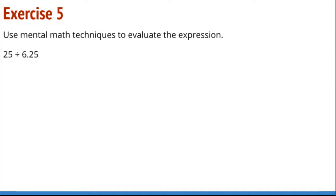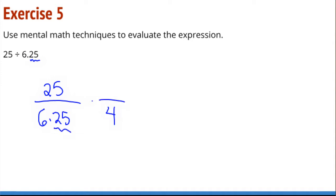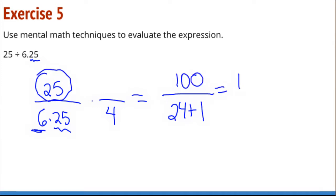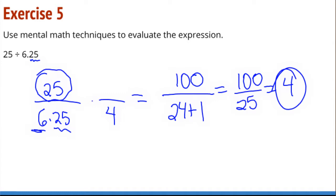Looking at exercise 5: we have 25 divided by 6.25, and 25 hundredths is one fourth. If I multiply by 4, then 4 times 25 hundredths gives 1 whole, 4 times 6 gives 24, and 25 times 4 is 100. So I have 100 divided by 25, which is 4. Instead of multiplying by 100 and getting 2,500 divided by 625, I can just multiply by 4 and these quarters become whole numbers.